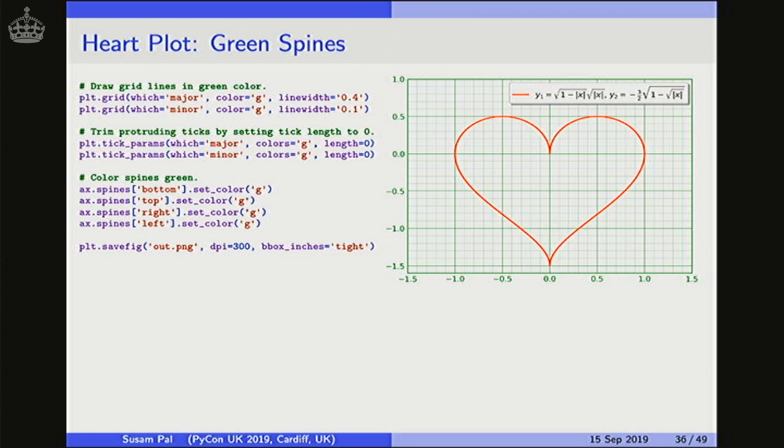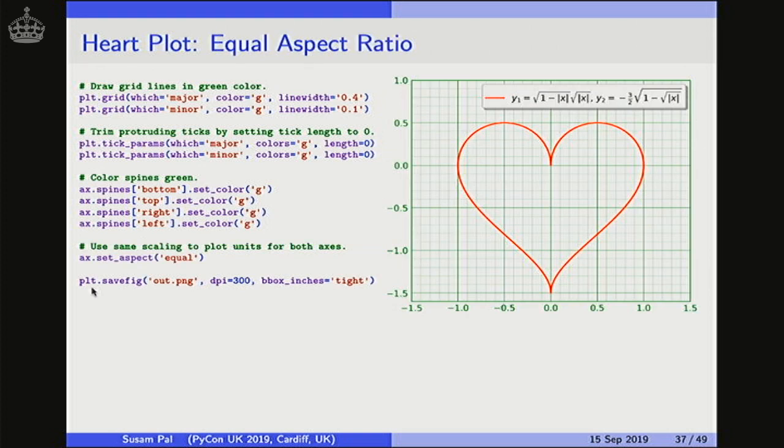There is one little problem and that is these grid boxes. Each major grid box is 0.5 by 0.5 in dimension. Although it doesn't look exactly like a square. It looks a little bit squished. That is because of the aspect ratio. So now I am setting the aspect ratio to equal so that the same scaling is used for plotting both the x-axis and y-axis units. And now the grid boxes look like squares as well as the heart also looks more wholesome now.